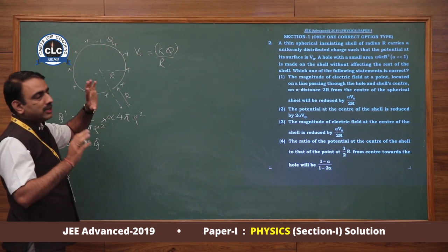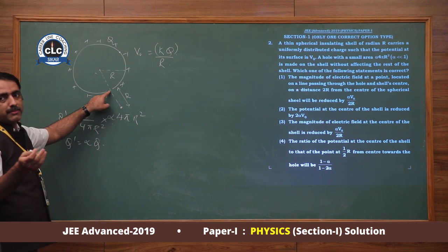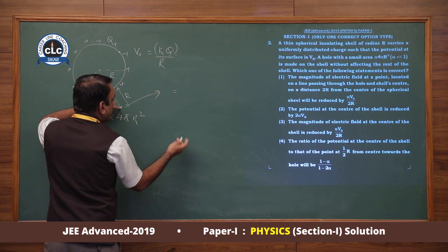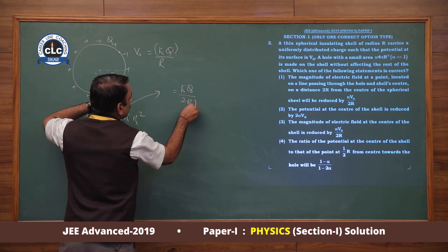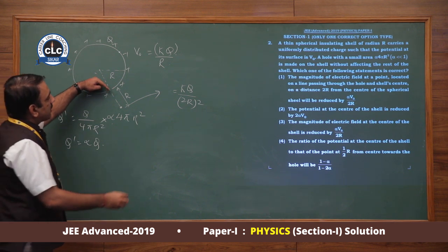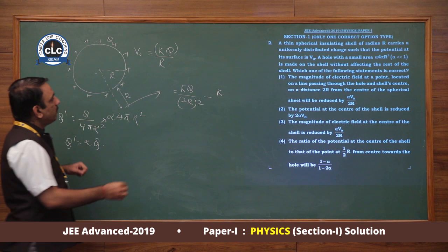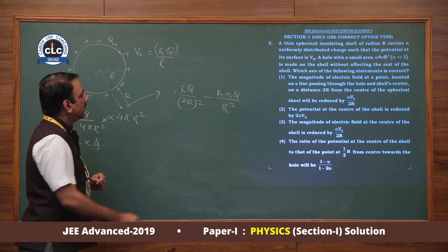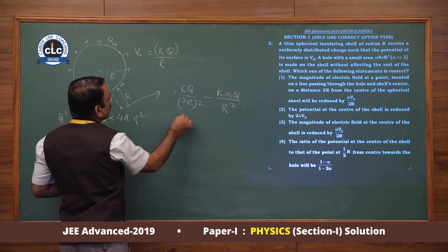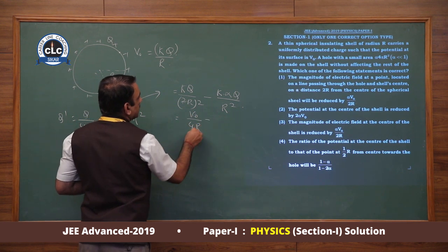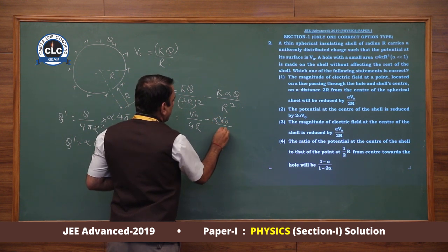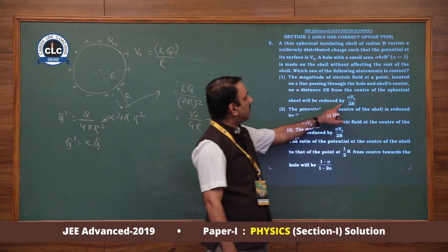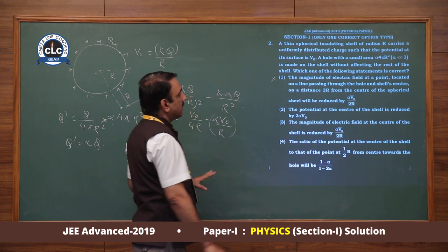We use superposition. First we take the complete sphere, then we subtract the removed part. The electric field will be E = KQ/(2R)² - K(alphaQ)/R², where the first term is from the complete sphere and second is the removed charge treated as a point charge at distance R. Since KQ/R = V0, we get E = V0/4R - alphaV0/R. The reduction in field is alphaV0/R, so the first option is correct.